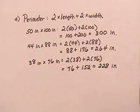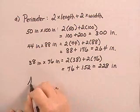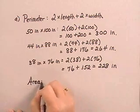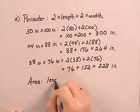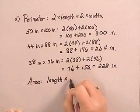Now that was the perimeter of each of the tables. Now we need to find the area of each of the tables. The area formula is length times width.